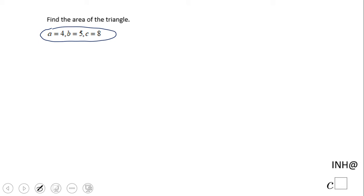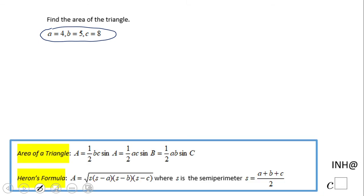So we have two formulas, but since three sides are given, the way we're going to do it is by using the Heron's formula.